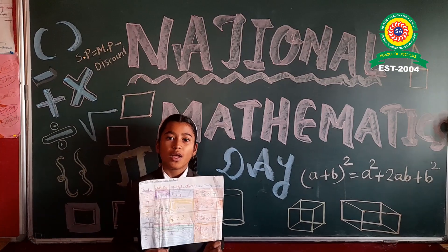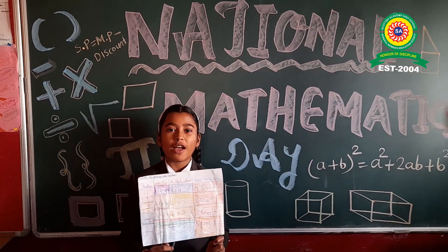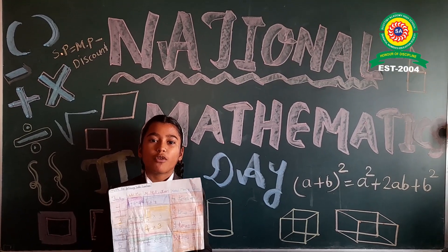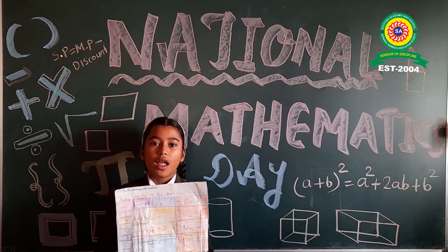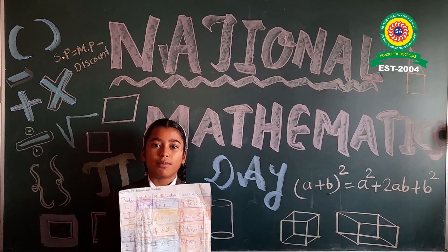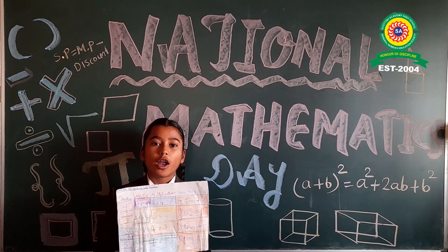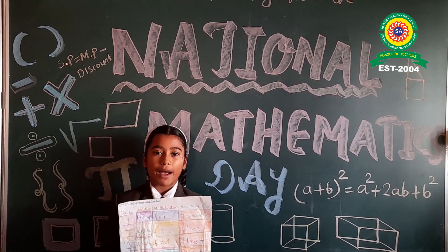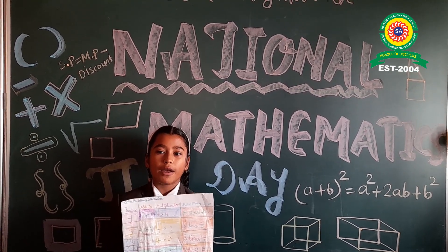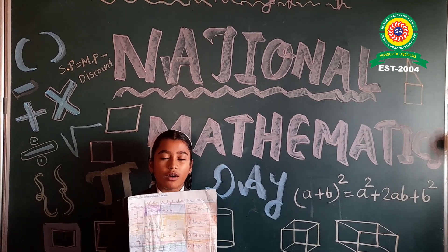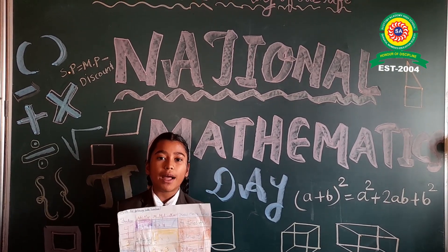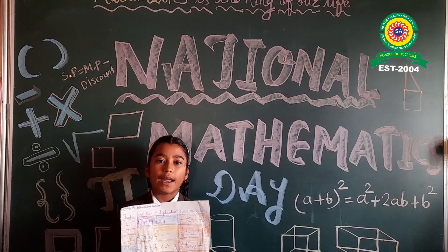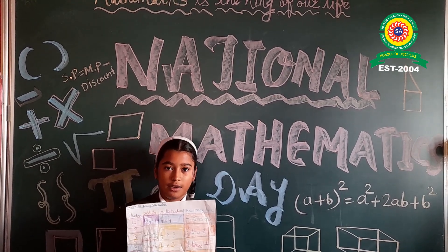Good morning everyone. My name is Henry Patti from Standard 4A. I am explaining a fraction: 4 upon 9. 4 times 1 upon 9. 1 by 9 multiplied by 4. 4 times 4 times 1 upon 9.